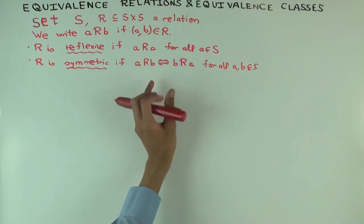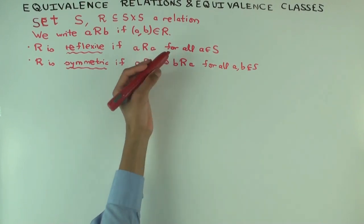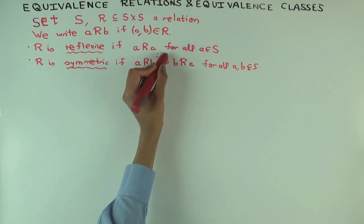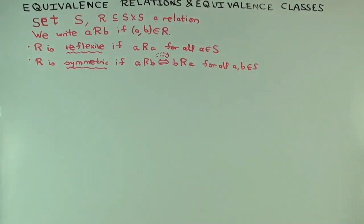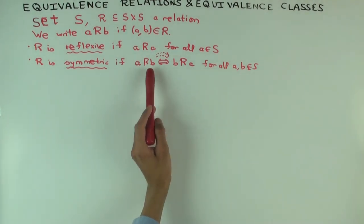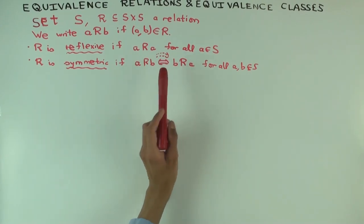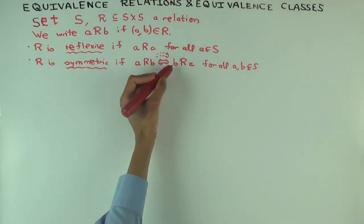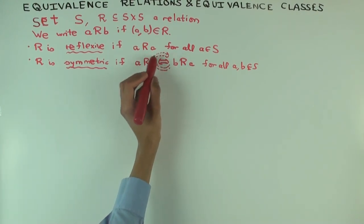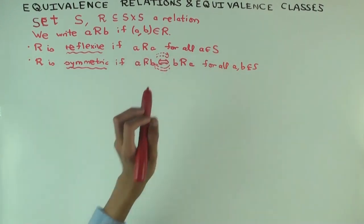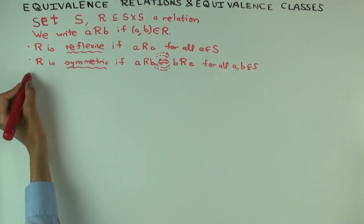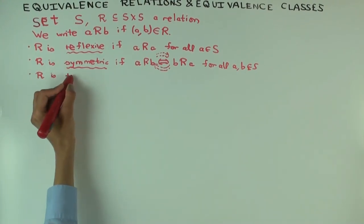I could have written this in just one direction. Why? Because if A R B implies B R A, you can interchange the roles of A and B in that statement to also get the other direction. So both directions say the same thing — if you assume one direction is true, so is the other, and therefore the two are equivalent.